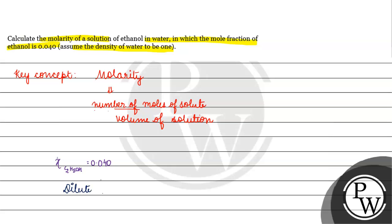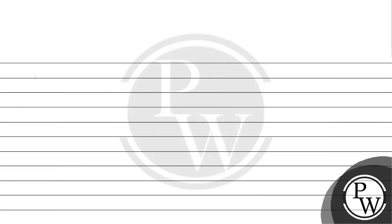This method is called the diluted solution approximation. We use the fact that the volume of solution is approximately equal to the volume of solvent. So if we say that the volume of solution is 1 liter, then the volume of solvent is approximately 1 liter. Knowing the density, we can find the mass of water.